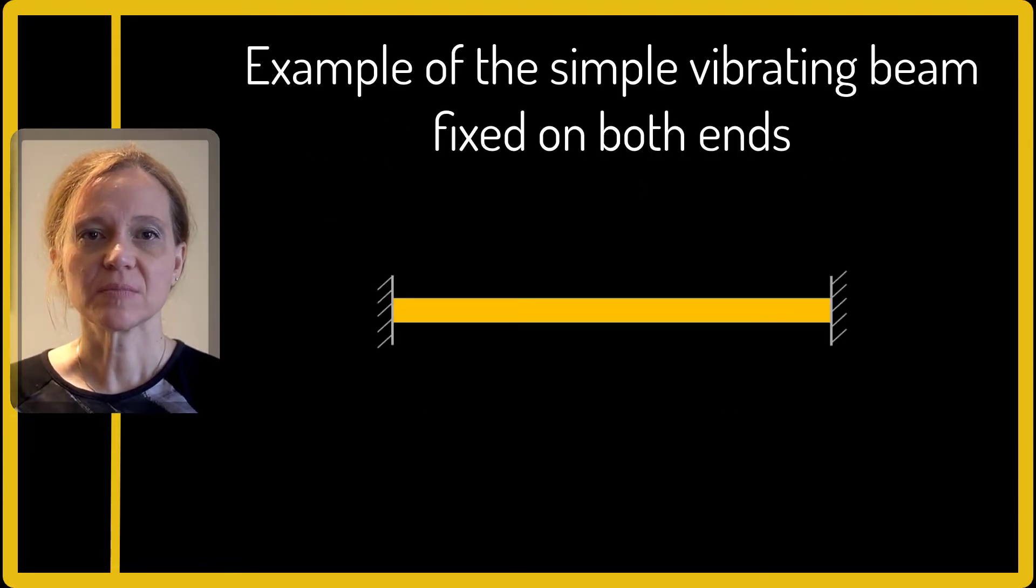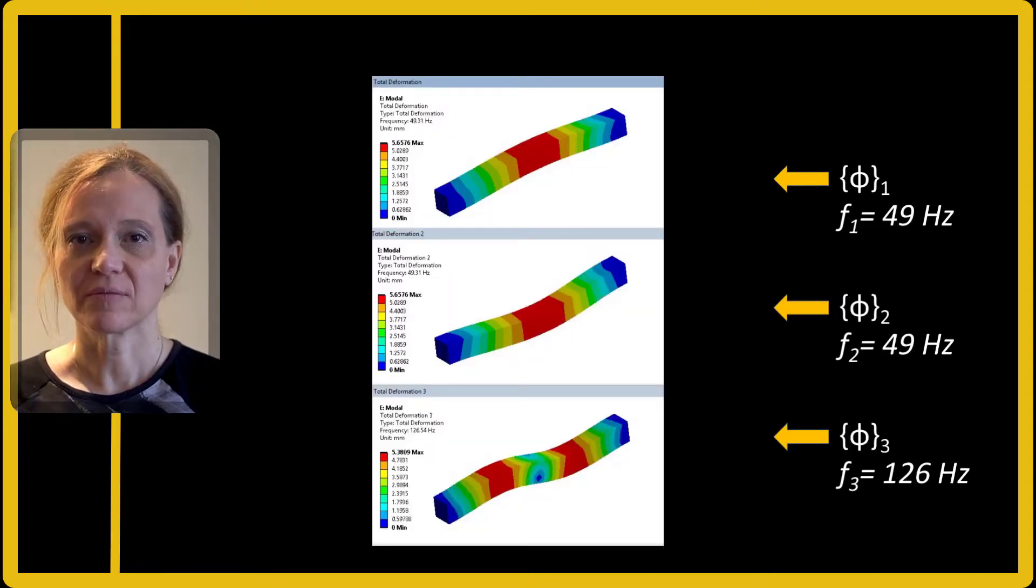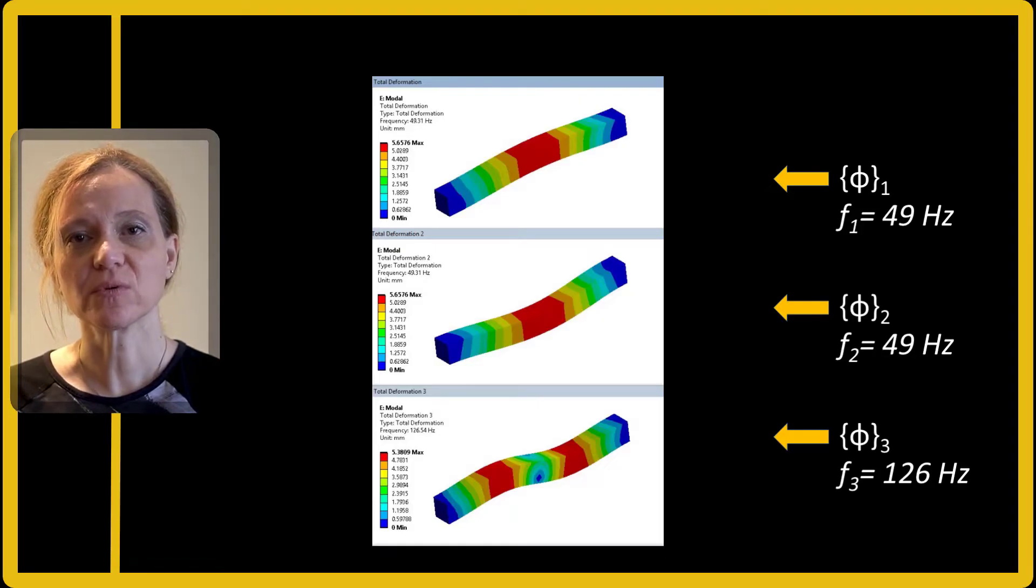In the example of the simple vibrating beam fixed on both ends, if the beam displays a mode shape of half of the sine wave, it would be vibrating in modes one or two. If the beam displays a mode shape of a full sine wave, it would be vibrating in mode three.